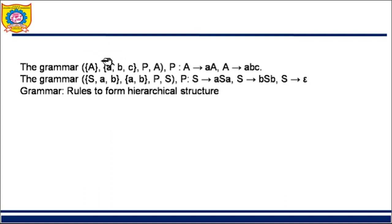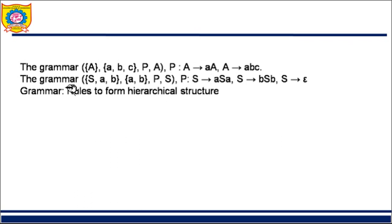This is the set of non-terminals, this is the set of terminals — N for non-terminal, T for terminal. In this grammar I have only one non-terminal; these are all the terminals; P is the set of production rules; A is the start symbol. The first production is A gives small 'a' capital A, and capital A gives A, B, C. There is one more example where capital S is the only non-terminal, A and B are terminals, P is the set of production rules, and S is the start symbol.